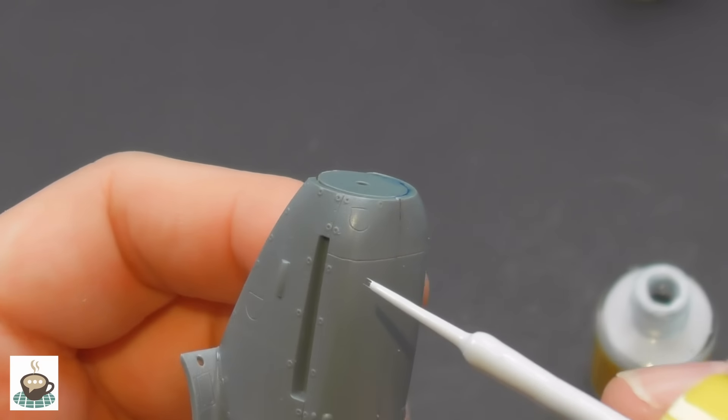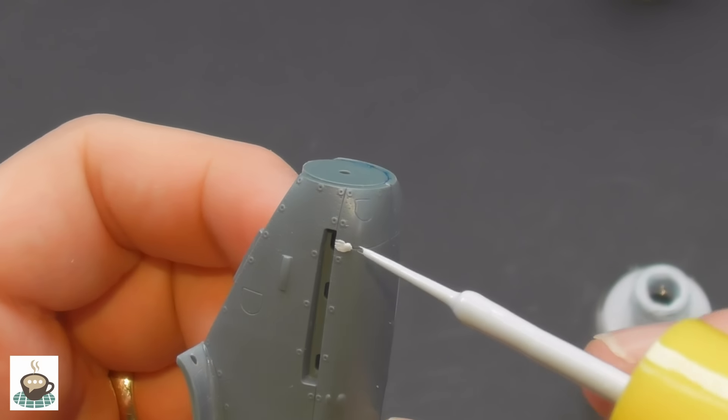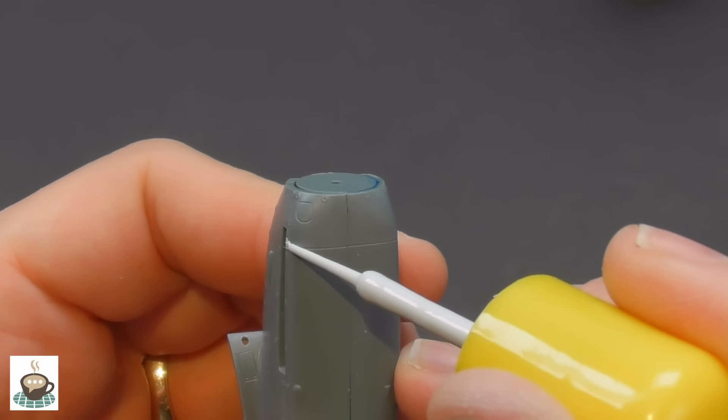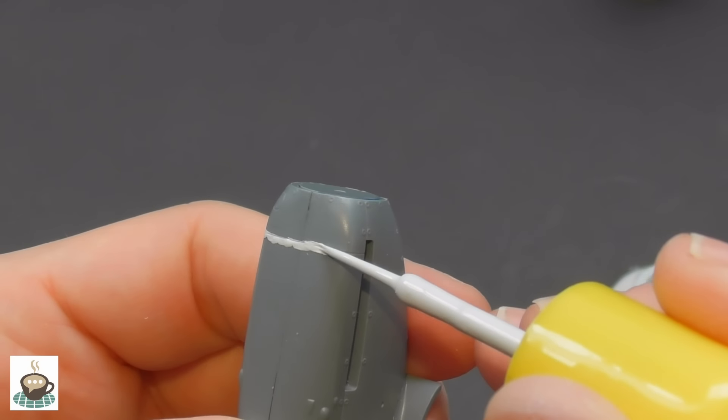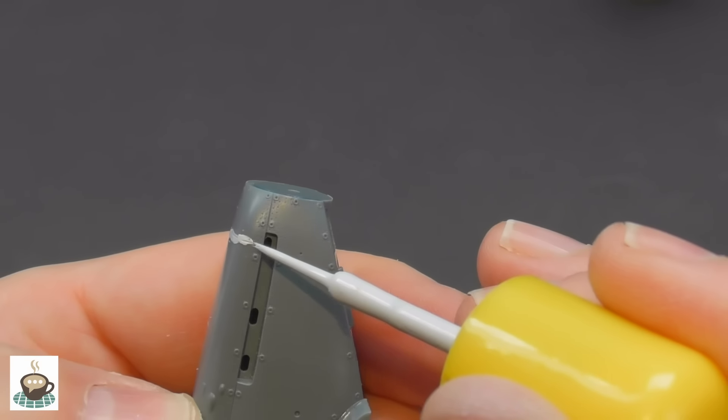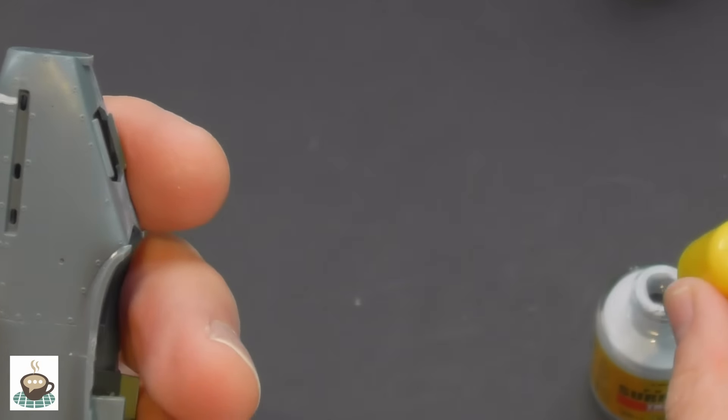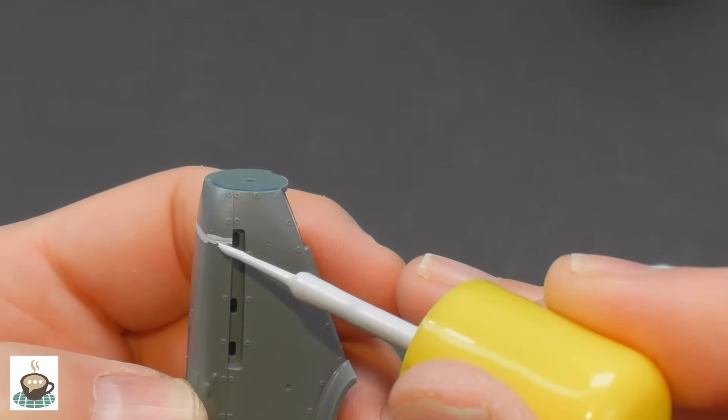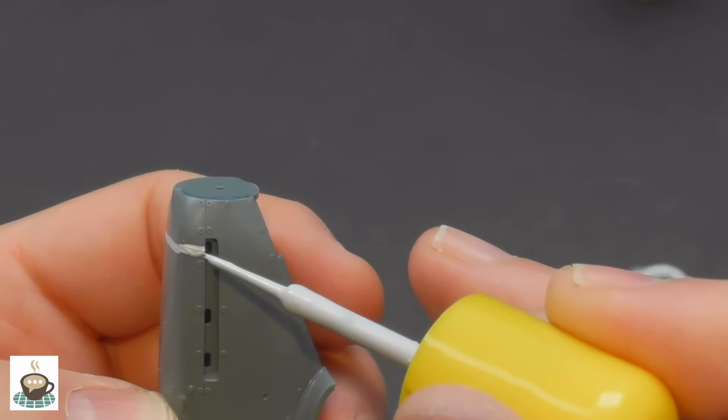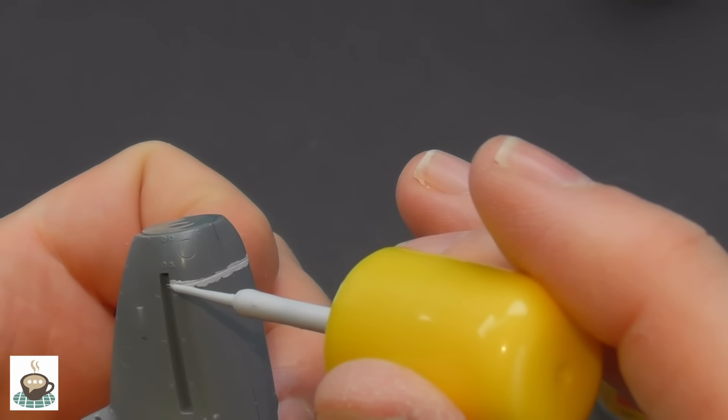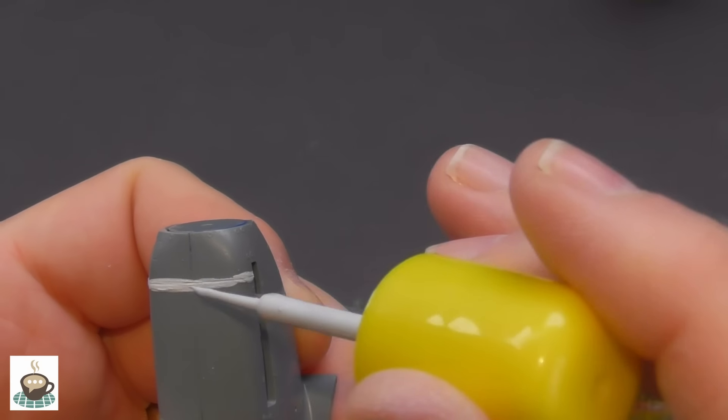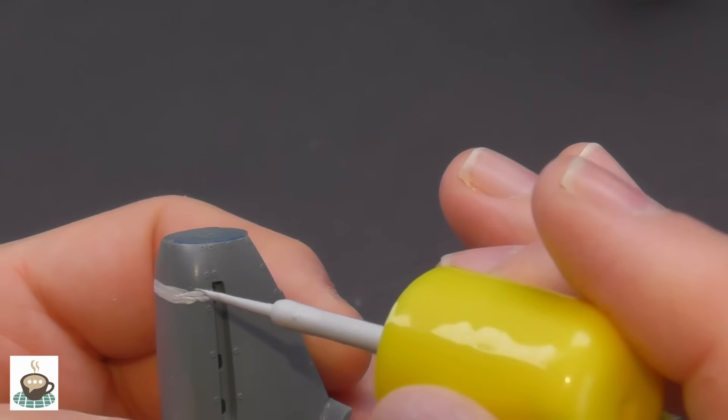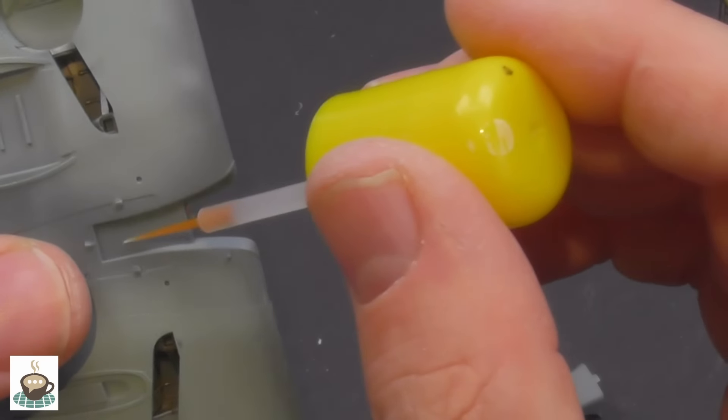The instructions said that this seam had to go, so use this thick surfacer from Ammo. Now they do claim it doesn't shrink. It does a little bit, which is kind of inevitable. In hindsight, I think probably using the super glue would have been better, but I thought I'd give it a go. I did get a slight ghost seam a little bit later. So, you know, maybe I didn't use it properly, maybe I put it on a little bit too thick, I don't know.